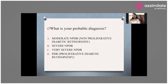The question is: what is your probable diagnosis looking at the ophthalmology report of this patient? As you must know, there are two basic types of diabetic retinopathy — NPDR meaning non-proliferative diabetic retinopathy, and PDR meaning proliferative diabetic retinopathy. The options are: A) Moderate NPDR, B) Severe NPDR, C) Very Severe NPDR, and D) PDR, that is proliferative diabetic retinopathy.